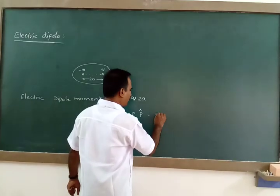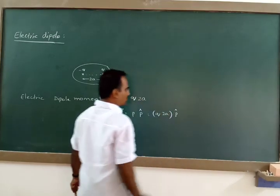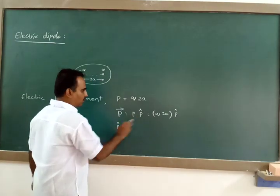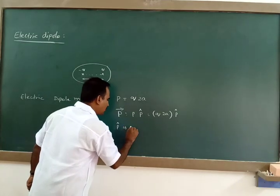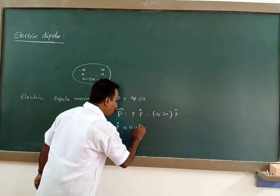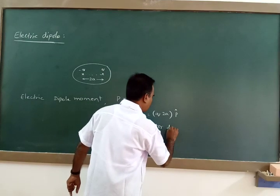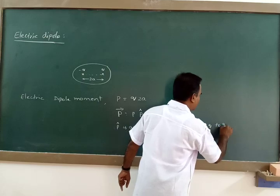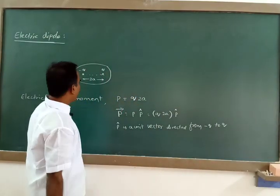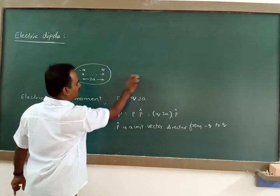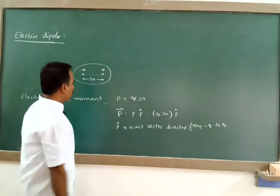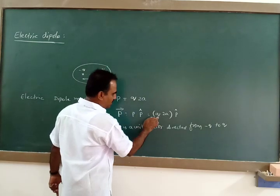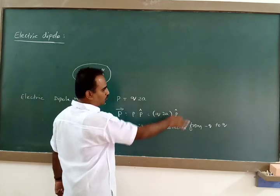This dipole moment is a vector quantity, so vectorially it can be written as vector P = Q × 2a, times P-cap. This P-cap gives the direction of the dipole moment. P-cap is a unit vector directed from minus Q to plus Q. So the direction of dipole moment is always from the negative charge to the positive charge.